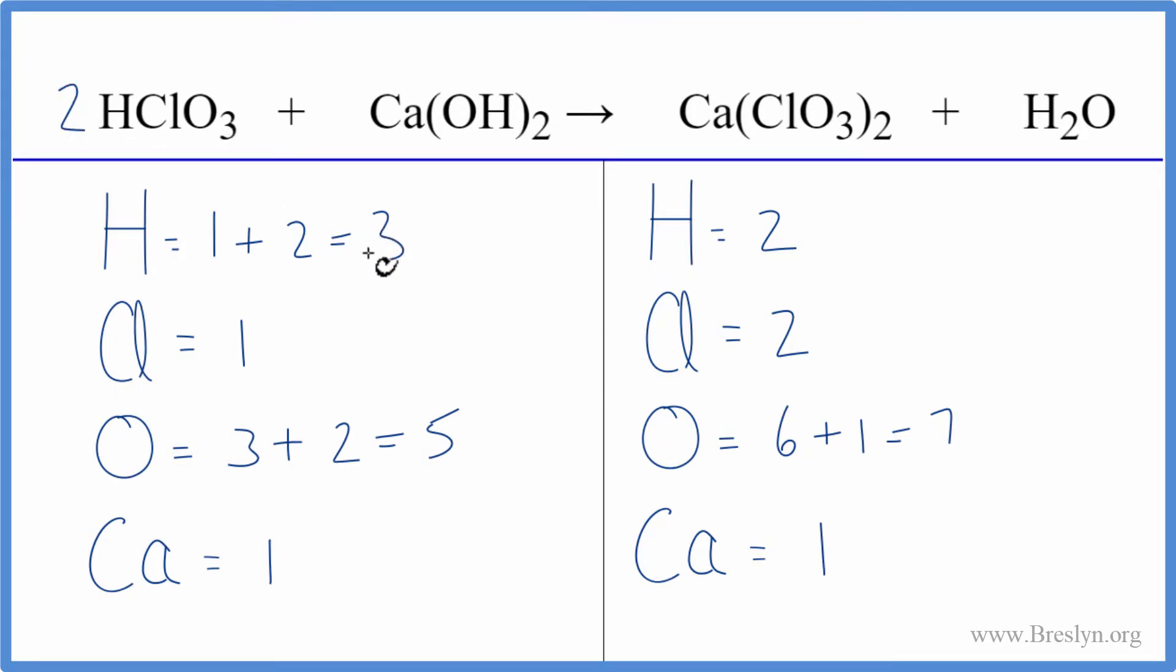So now I need to update all these numbers. I have one times two for the hydrogen plus two times the one here, so I have four hydrogen atoms. Chlorines: one times the two, that's two, so those are balanced. Oxygens: three times the two is six, plus two times the one here, that's another two, so I have eight oxygen atoms.